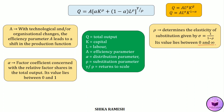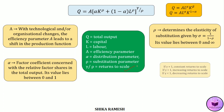Usually the value of elasticity of substitution lies between 0 and infinity. In some textbooks, the substitution parameter is expressed as −ρ or −θ. So if the substitution parameter is given as a negative value, then the elasticity of substitution σ = 1/(1+ρ) or 1/(1+θ). Whereas if the substitution parameter is a positive value, then σ = 1/(1−ρ).